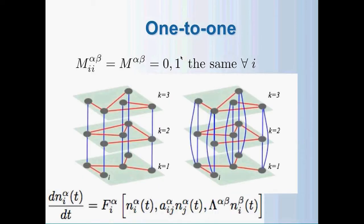In multiplex networks we assume a one-to-one relation that is the same for all nodes. We identify M_{ii}^{αβ} with a single number m_{αβ}, which can be zero or one, indicating whether the layers are connected or not. For example, on the left we have three layers where layer one and layer three are not connected, while on the right layer one and layer three are connected. The equation at the bottom gives the general form for the dynamical evolution of the system.